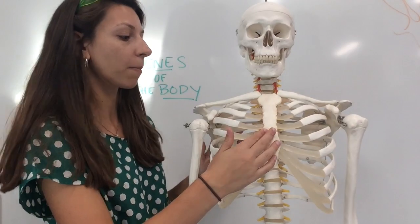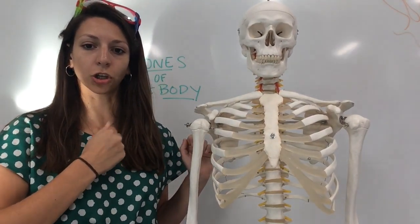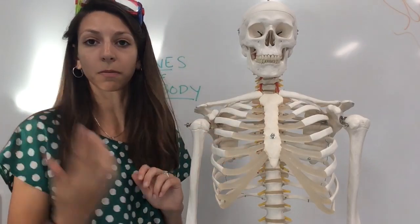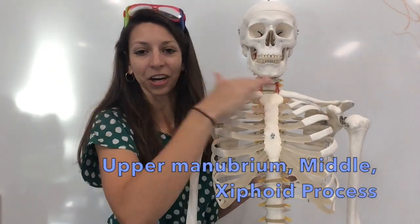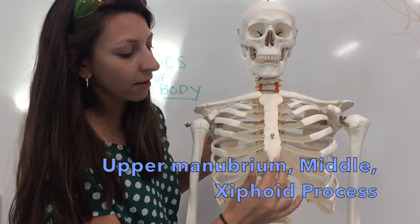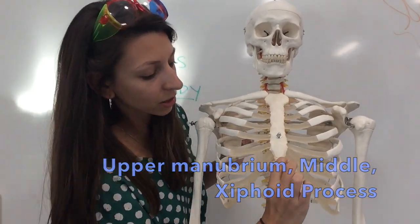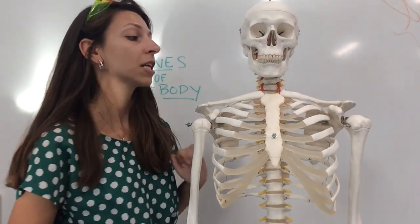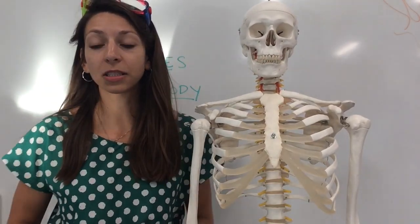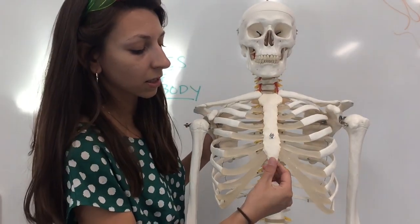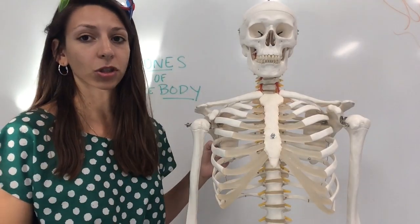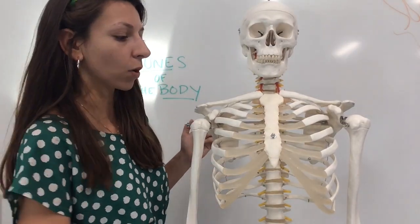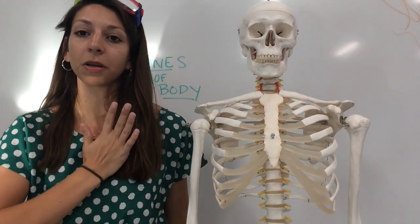This is our sternum here — if you knock on your chest you can feel it. It's one bone in total but composed of three main parts: our upper manubrium, our middle body, and the xiphoid process, which is the tiny part at the bottom. If you are administering CPR and push deeply — about an inch — that can cause some ribs to crack, which means you're doing it right. However, if you press incorrectly, the xiphoid process can break off and cause further damage. Make sure you're pressing on the upper part of the sternum to avoid breaking off the xiphoid process.